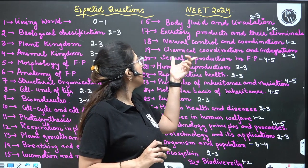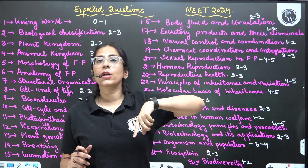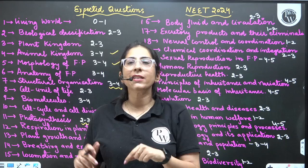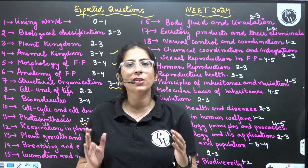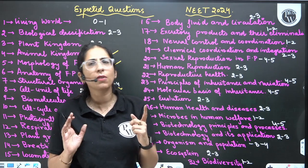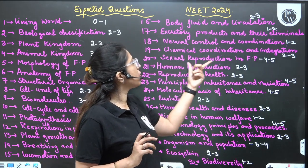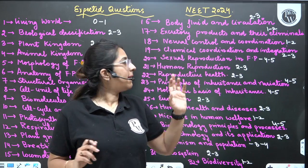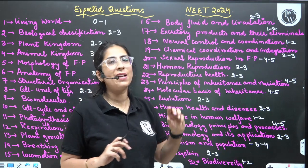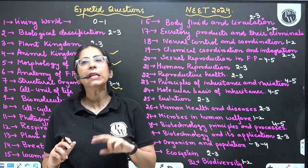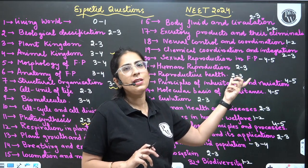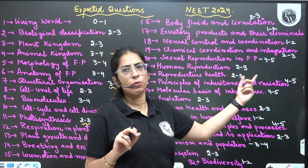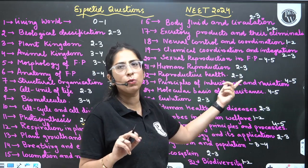Chemical Coordination and Integration is a very easy chapter — I have made a short video on different diseases in this topic, you can watch that in the shorts section within one minute. Sexual Reproduction in Flowering Plants is a super important chapter — 4 to 5 questions. Human Reproduction and Reproductive Health are interrelated chapters; you can expect a total of 4 to 6 questions from both — Human Reproduction: 2 to 3 questions, Reproductive Health: 2 to 3 questions.